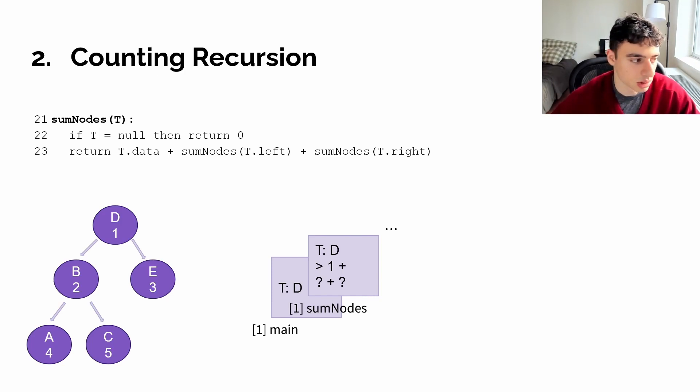But let's say once that terminates, we would receive the sum of the nodes in the left tree, which is 11. Now it has to be added to the sum of the nodes in the right tree. Again, the call stack has to pause again and wait for the result of sum nodes on T dot right. Once that's returned, it'll be added back to our original sum. So counting recursion is a useful way to represent aggregates with any sort of operands.